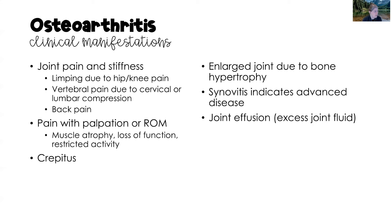The clinical manifestations of osteoarthritis include joint pain and stiffness. This can manifest as limping due to hip or knee pain, vertebral pain due to cervical or lumbar compression, and chronic low back pain. With palpation and range of motion, the patient will also experience pain. We might see muscle atrophy, loss of function of the joint, and restriction of activity. Crepitus can be palpated or even heard when the joint is manipulated. The joint could also be enlarged due to bone hypertrophy. Synovitis — inflammation of the synovial fluid — indicates advanced disease, and joint effusion, which is excessive joint fluid, may also occur.